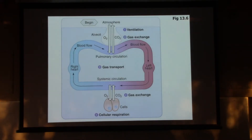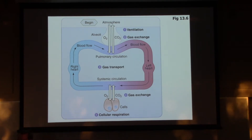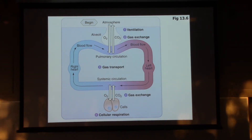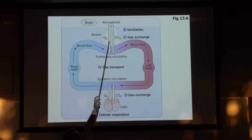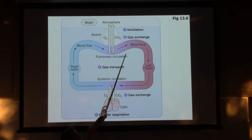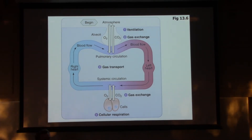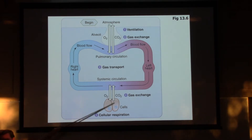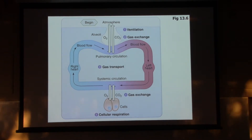So we just covered ventilation - how to get air into our lungs and how to get that air back out. Now we need to take a look at gas exchange. How are we going to get the oxygen in our alveoli into our blood? The carbon dioxide in our blood into the alveoli.